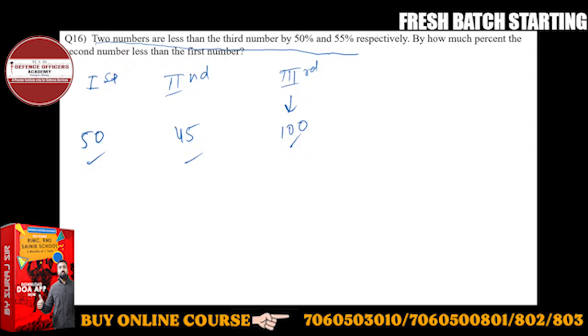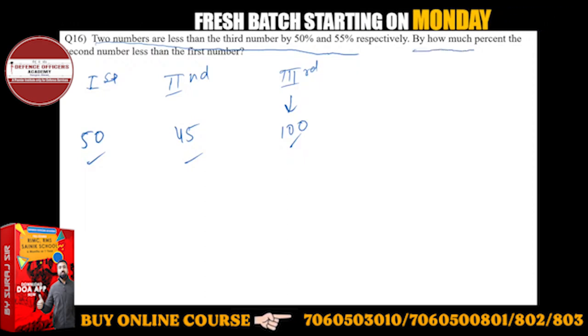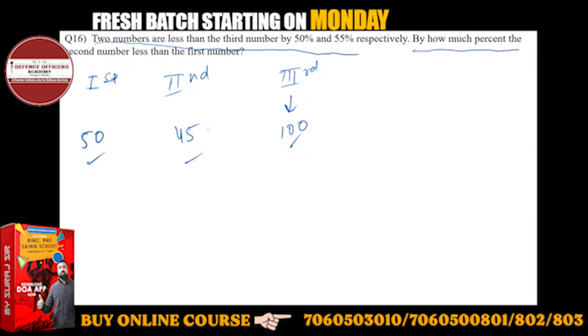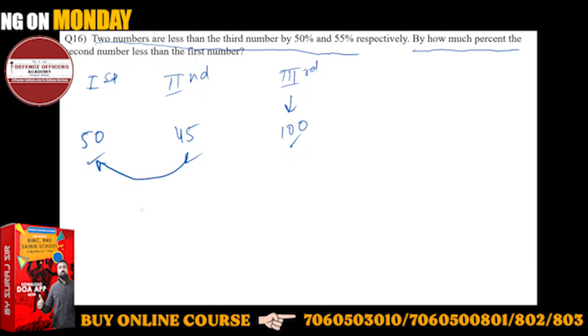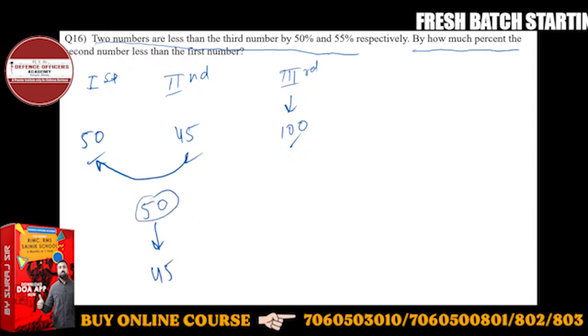Now what you have to do, what has been asked from you, is by how much percent the second number is less than the first number. We have to find out how much less 45 is compared to 50.